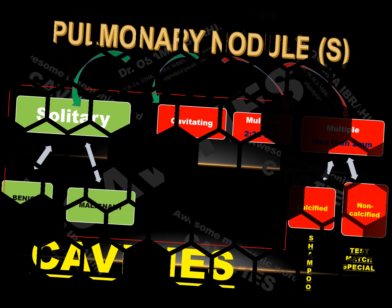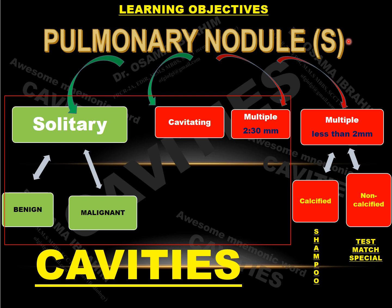If presented with pulmonary nodules, I subdivide them into solitary or multiple. If solitary, I should discriminate benign from malignant pulmonary nodules. For multiple pulmonary nodules less than two millimeters, I subdivide them into calcified or non-calcified. By the mnemonic words for each subdivided type we can reach the list of differential diagnoses — for example, 'SHAMPOO' for calcified: silicosis, hypersensitivity, histoplasmosis, alveolar microlithiasis, metastasis, mitral stenosis, or previous chickenpox exposure.